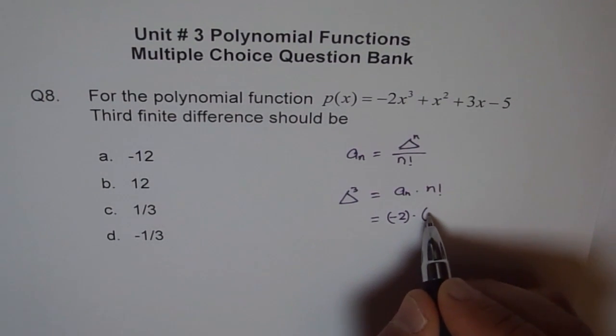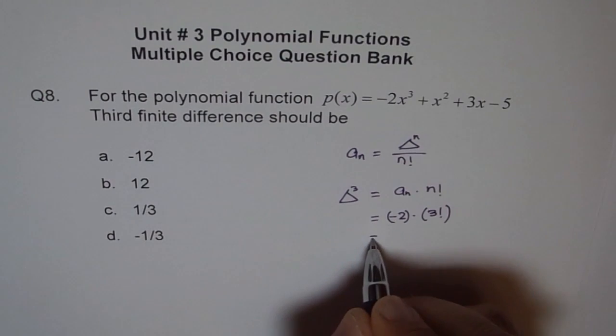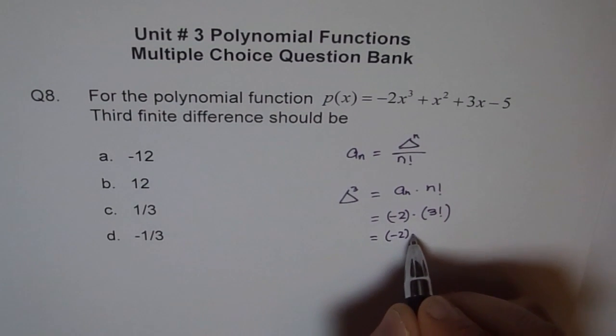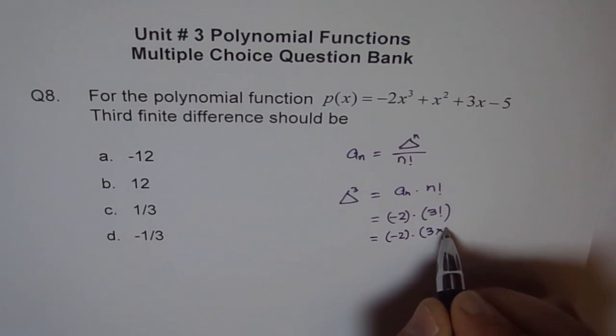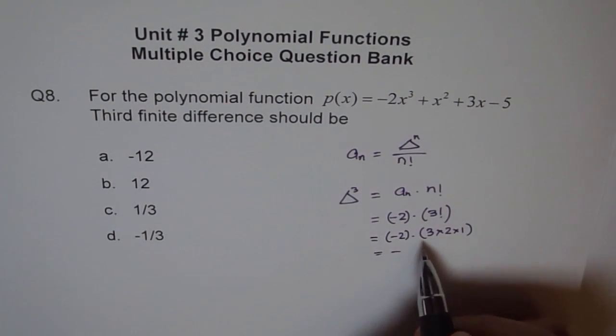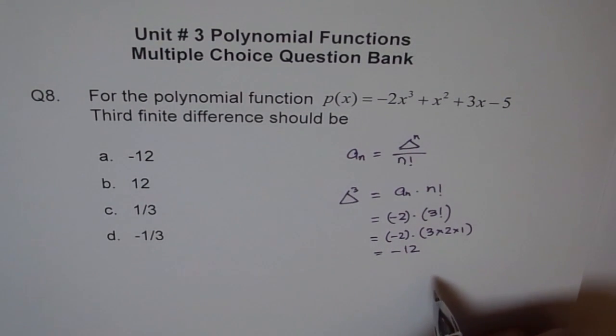You know what is 3 factorial? Well, 3 factorial is 3 times 2 times 1. So let me write that down. Times 3 times 2 times 1. So that gives us, 3 times 2 is 6, and 6 times 2 is 12. Minus 12.